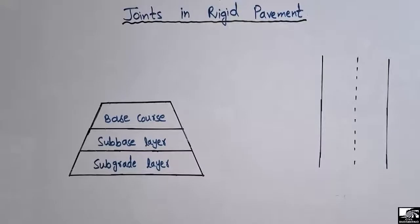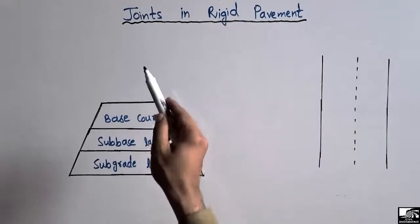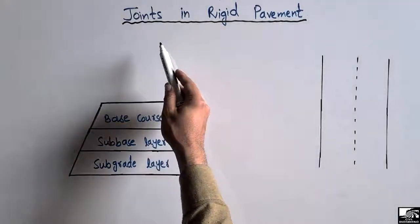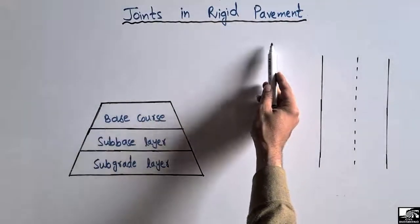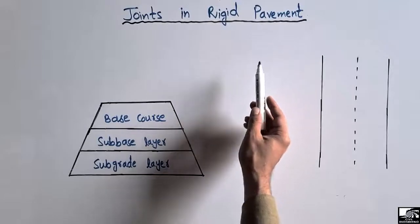Hello guys, welcome back to C1 Engineering YouTube channel. Please subscribe for daily C1 Engineering videos. Today's lecture we are going to discuss the types of joints that are used in the construction of rigid pavement.